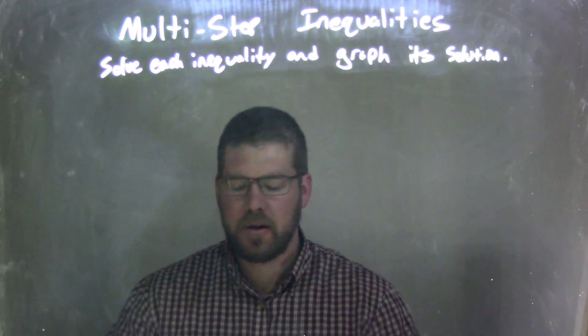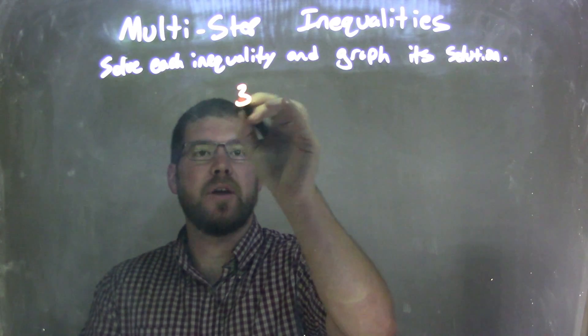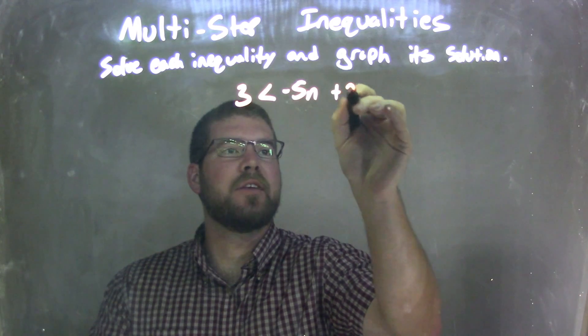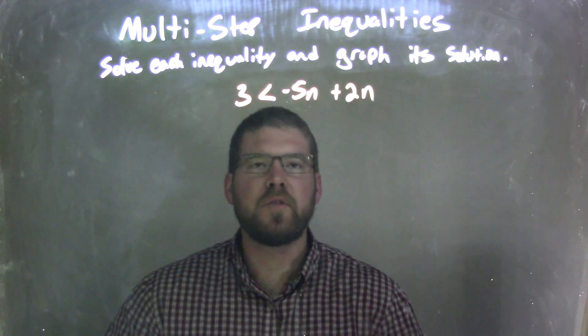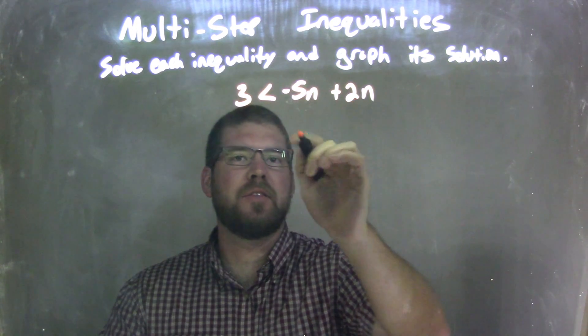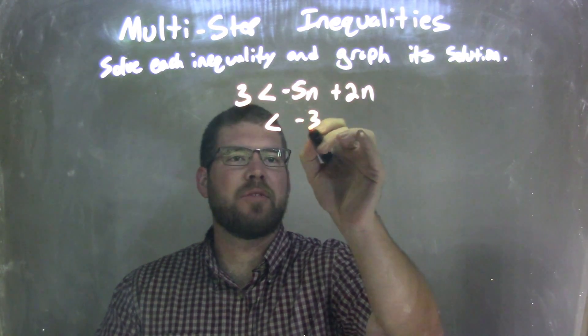So if I was given this inequality, 3 is less than negative 5n plus 2n. Well, first thing is I'm going to simplify this. So I'm going to combine the negative 5n and the 2n, and that gives me negative 3n.